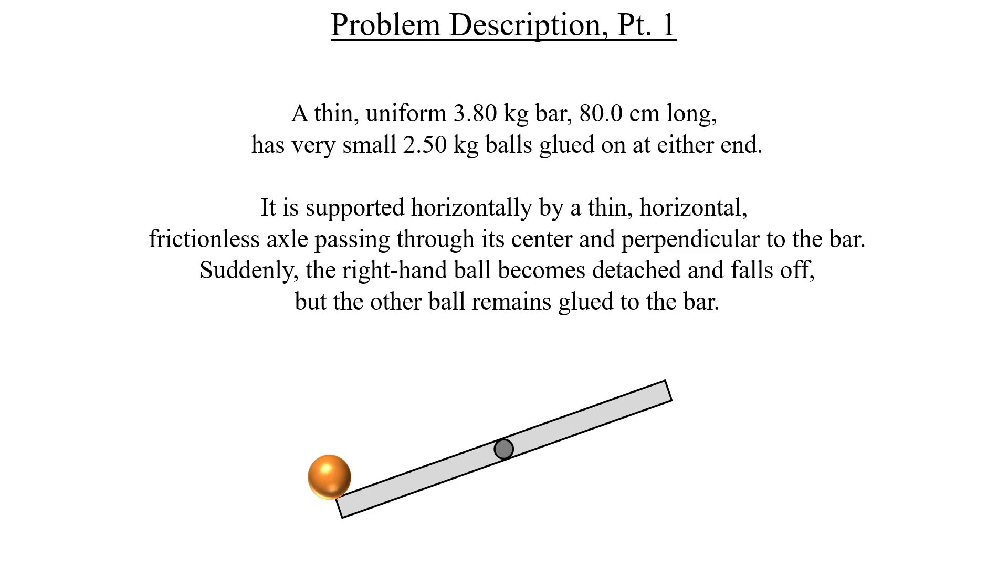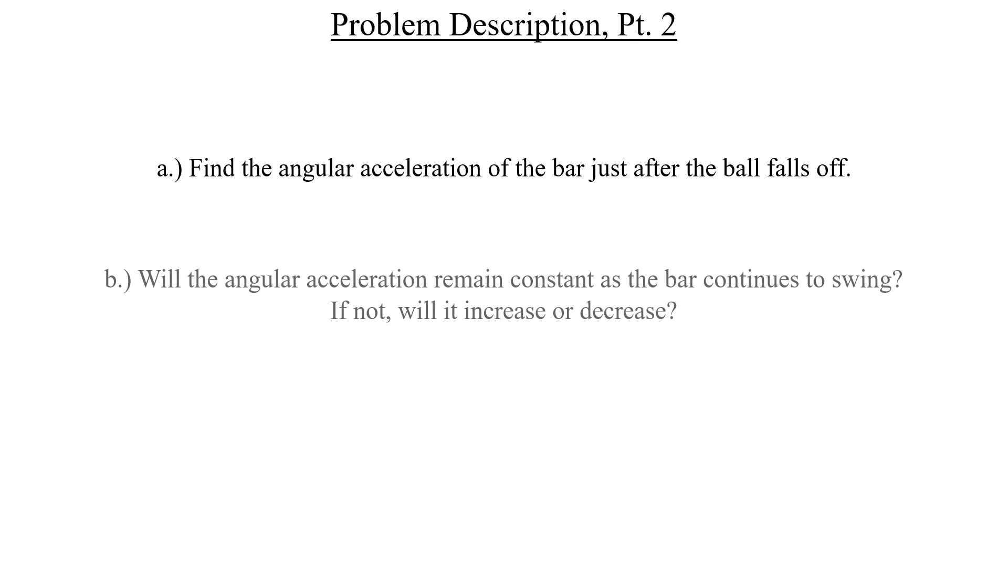That is all the information that we are provided and here's what the problem wants us to do. In part A we need to solve for the angular acceleration of the bar at the exact moment that the rotation starts. Then in part B determine if that angular acceleration remains constant. If it doesn't we need to describe how it changes. And finally in part C we're going to solve for the angular velocity of the bar once it rotates into a vertical position.